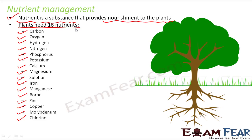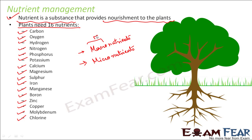The nutrients needed in large amounts are called macronutrients, and those needed in smaller amounts are called micronutrients. The word 'macro' means big, so macronutrients are those needed in more amounts. 'Micro' means small, so micronutrients are needed only in small amounts. Examples of micronutrients include molybdenum, copper, and zinc, while macronutrients include nitrogen and phosphorus, which are needed in large amounts.